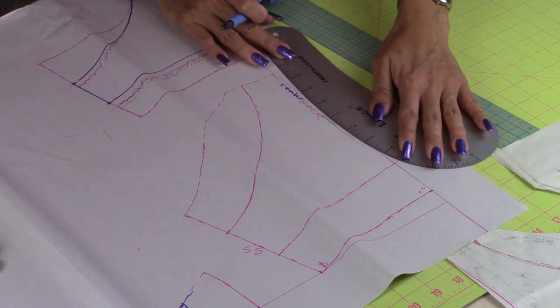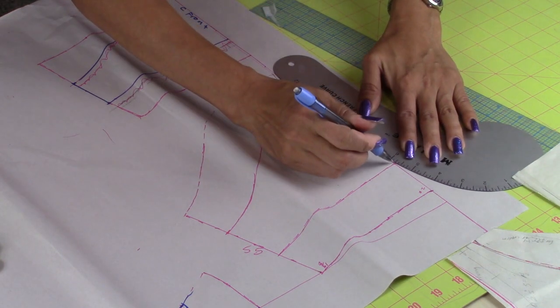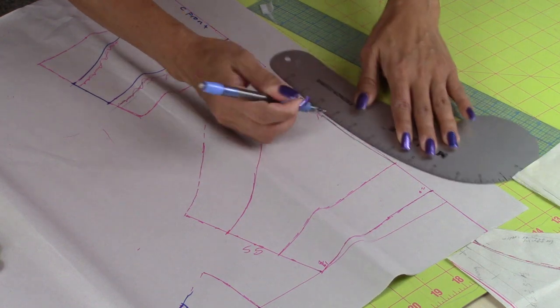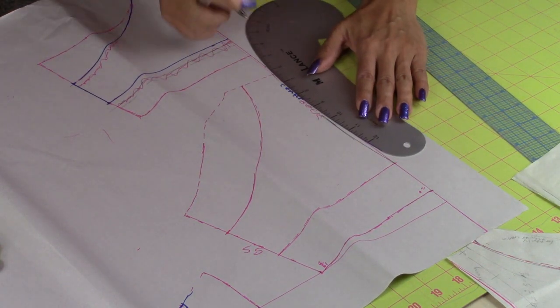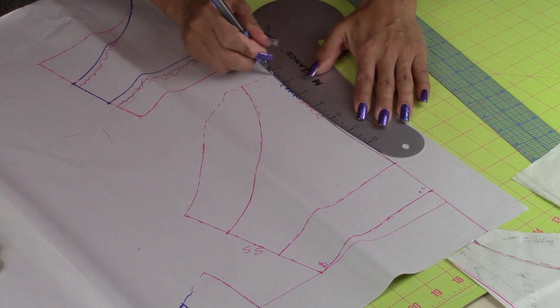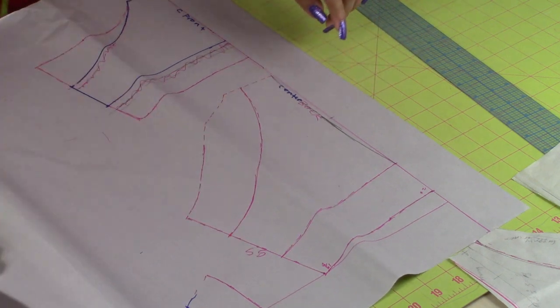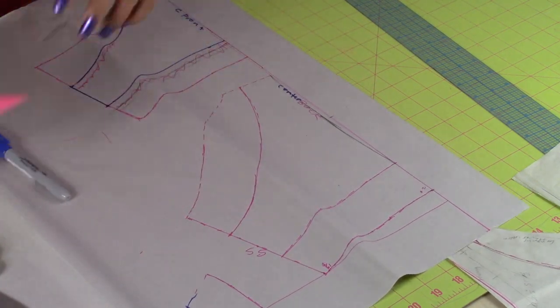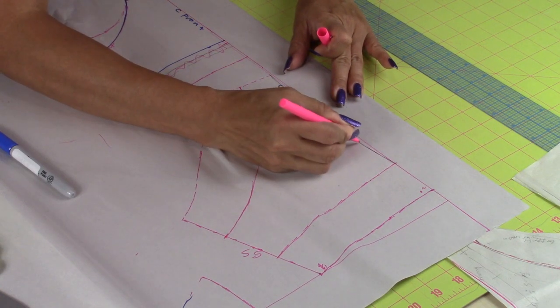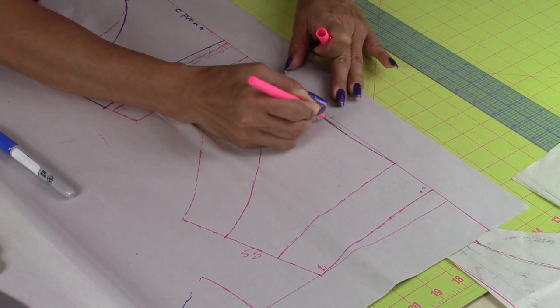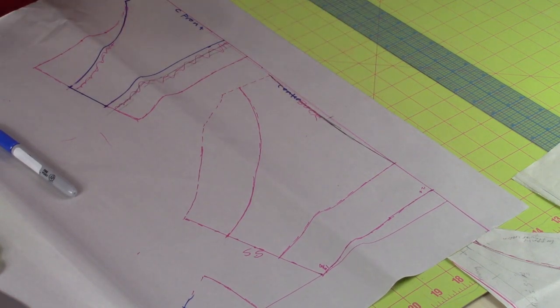Just because we don't want our panty to be baggy in the back. We want it snug. So we take that back. We take a little bit. I am going to mark it so you can see. Right there.